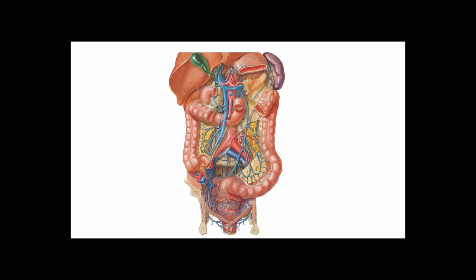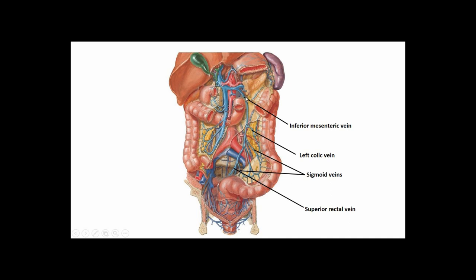Now let's look at the veins draining the gut tube — essentially the same names as the arteries but with a considerably different drainage pattern. The superior rectal vein drains the superior rectum, joins the sigmoid veins, then the left colic vein draining the descending colon. These consolidate into the inferior mesenteric vein. Here we diverge from the arterial pattern: the inferior mesenteric vein fuses its blood into the splenic vein, which drains a large amount of blood from the spleen, pancreas, and related structures.